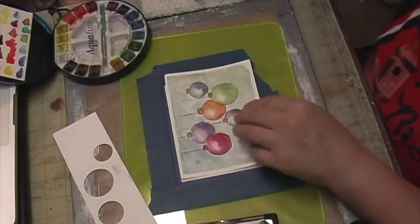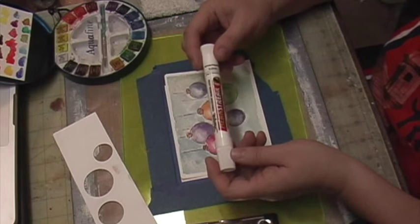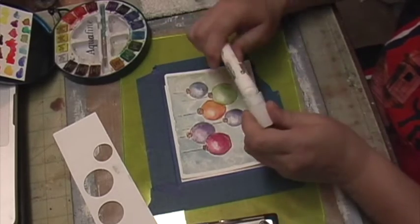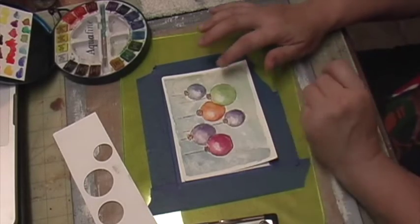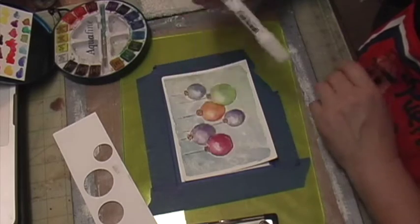Then you're going to need some Sharpie. This is called Sharpie Mean Streak and this is white, so I'm going to use that to put these highlights. I'm not very good with watercolor at preserving the whites, so I usually just take this and define my white areas like that.